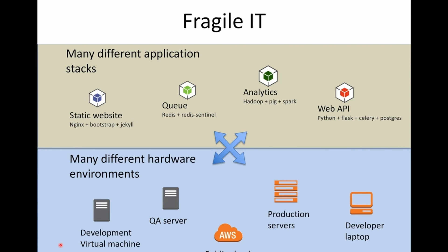One of the challenges we face in IT traditionally is that we're dealing with many different application stacks in our environment. We might have a static website application running on NGINX, some sort of message queue using something like Redis, an analytics stack running Hadoop and Spark, and a web API built using Python and the Flask framework. We have all these different application stacks that we need to manage — we might have dozens, or if we're working at a large company, hundreds of application stacks to maintain.